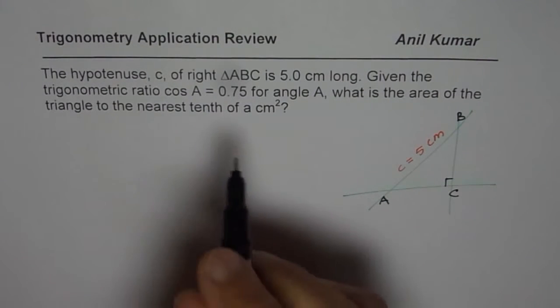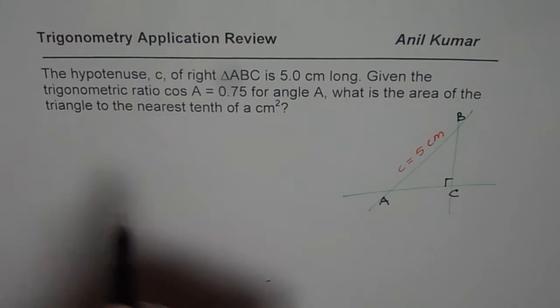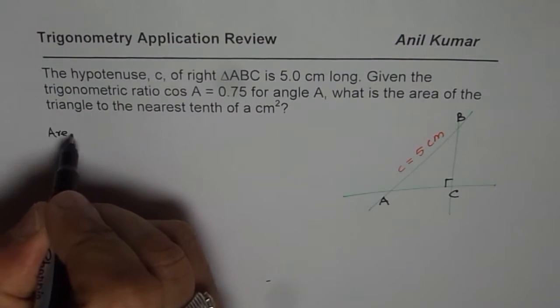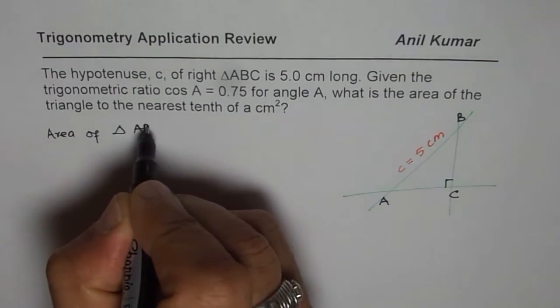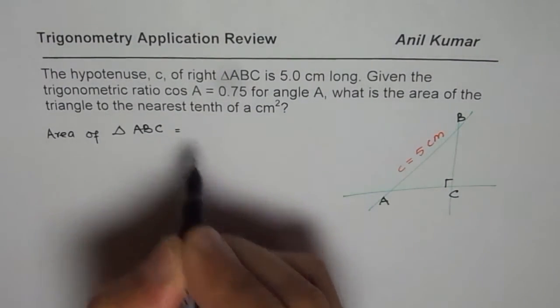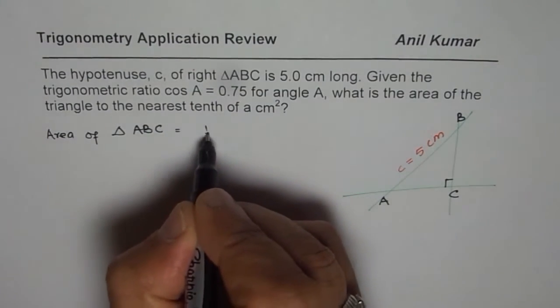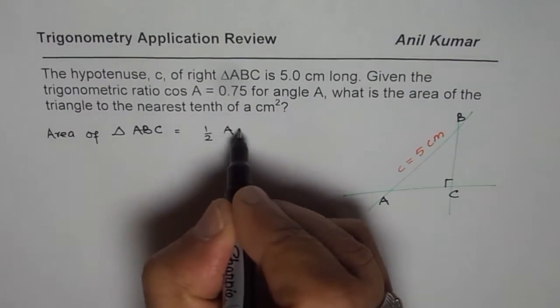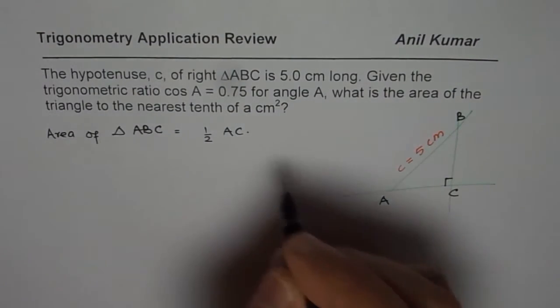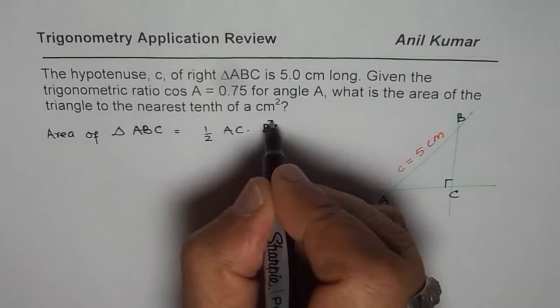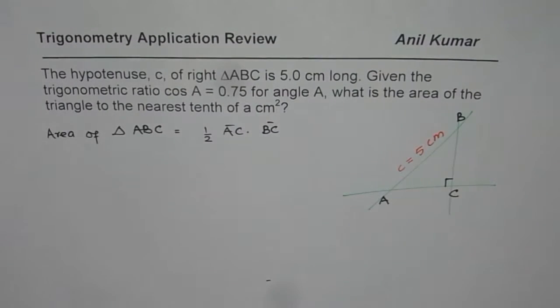Now the question is, we need to find area of triangle ABC. Area is half of base which is AC times the height which is BC. So that becomes the area of this particular triangle.